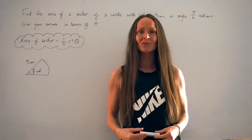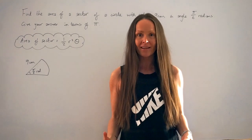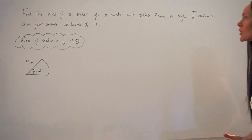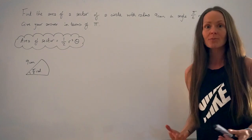Hey guys, in this lesson I'm going to show you how to find the area of a sector. So in this question it says find the area of a sector of a circle with radius 9cm and angle pi over 6 radians. Give your answer in terms of pi.